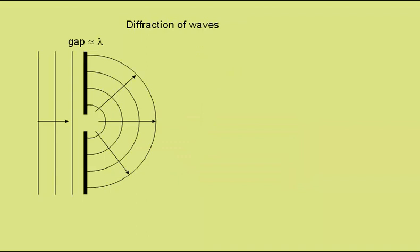This diagram shows us what happens when a wave meets a gap. We have a straight wave arriving from the left, and it meets a gap of a similar size to the wavelength of the wave. As the wave passes through, it spreads like this. This effect is called diffraction.